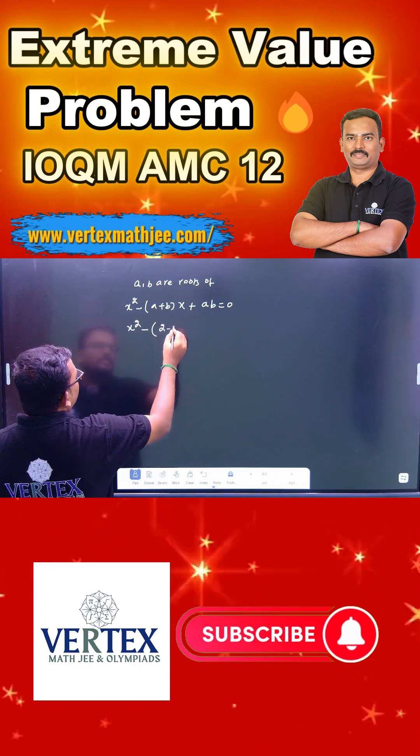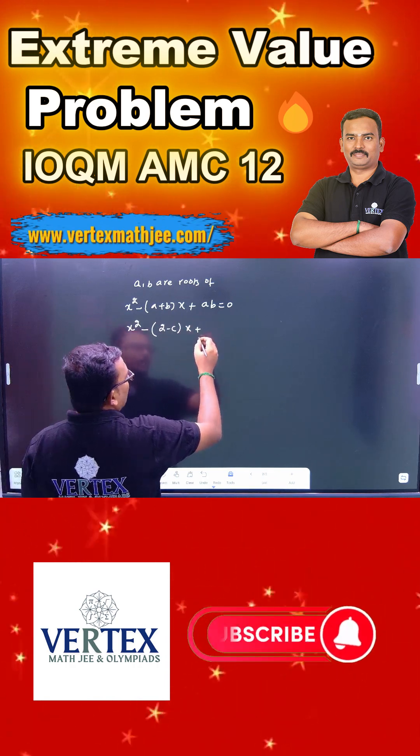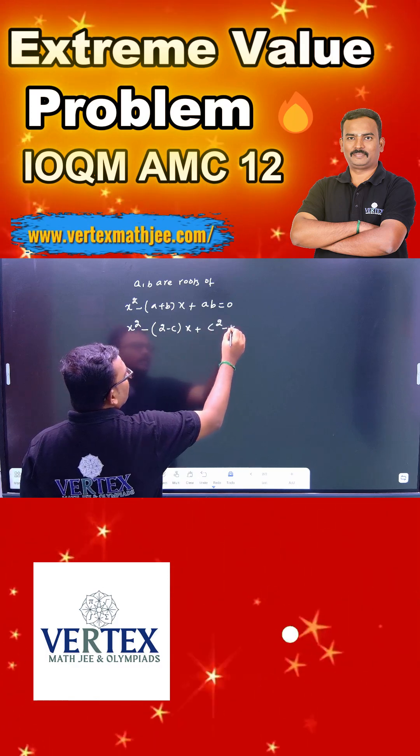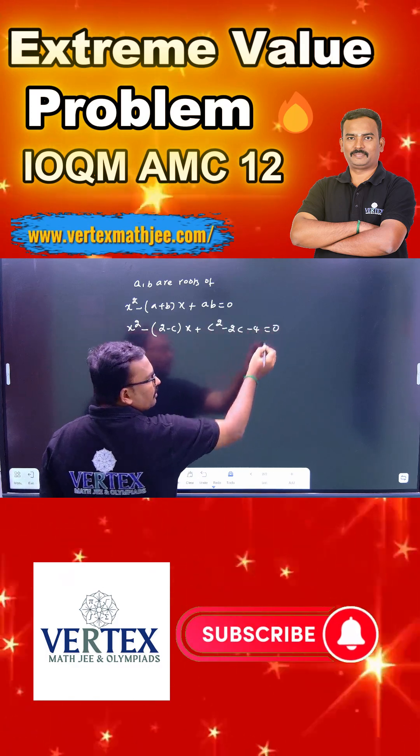Therefore, how to rewrite this? What is a plus b? 2 minus c into x. What is ab? So ab equals c squared minus 2c minus 4 equals 0. I hope everyone understands.